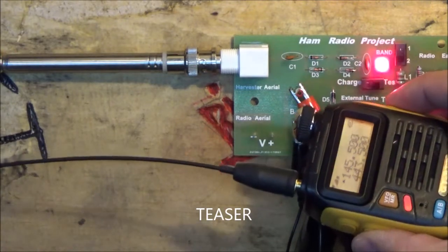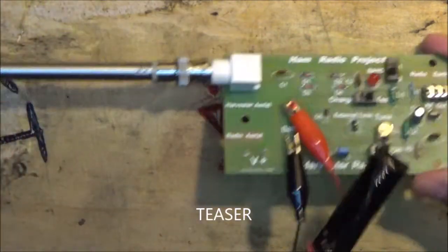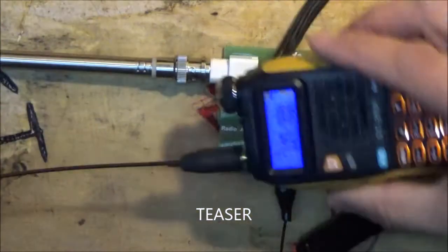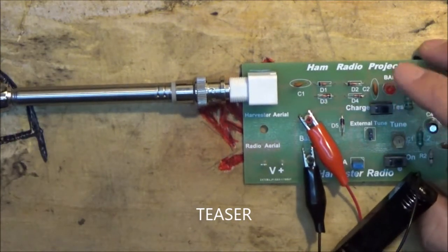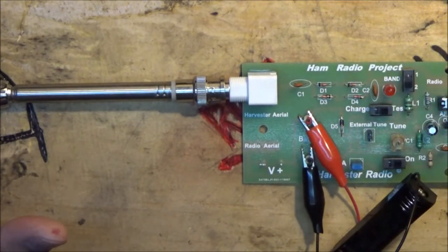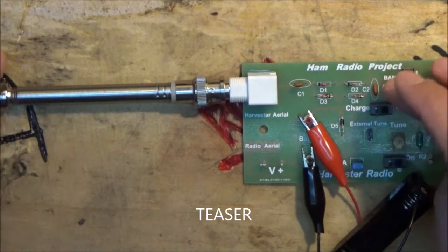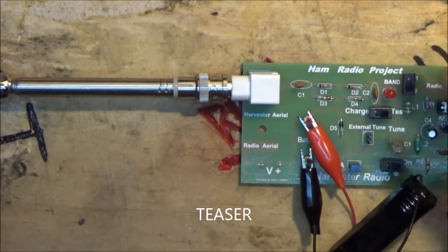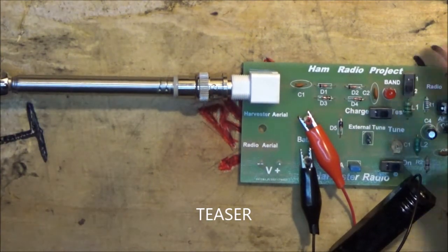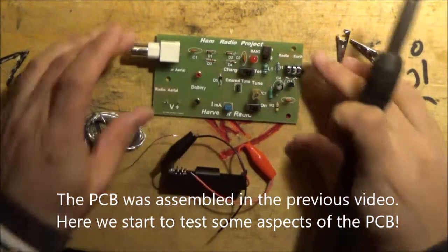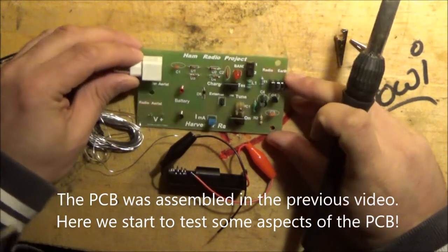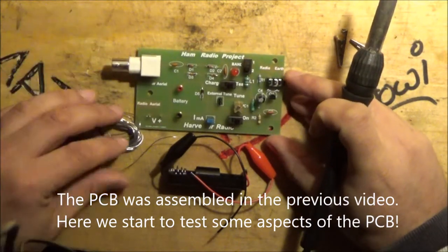When I press the transmit button, this is completely passive. There's nothing connected to this right now. When I press the transmit button on the radio, the LED lights up here, which means there must be at least 14 milliamps and 2.2 or 2-something volts going into this LED. A couple more things that we need to do to get this little free energy ham radio project sorted out.